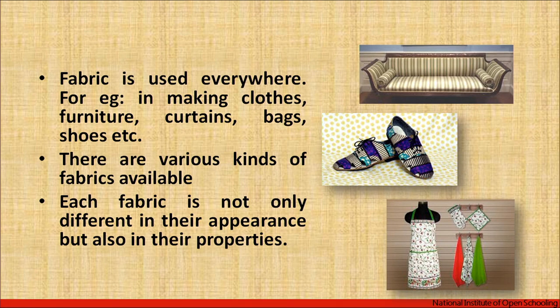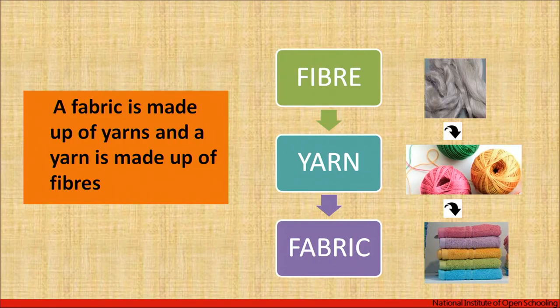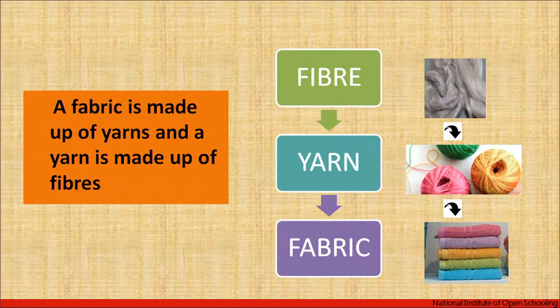Fabric is used everywhere — for example in making clothes, furniture, curtains, bags, shoes, etc. There are various kinds of fabrics available in market like cotton fabric in various forms like poplin and cambric, silk, wool, and shiny fabrics like brocades. A fabric is made up of yarns and yarns are made up of fibers. So the basic building block is the fiber; after fiber we make yarn, and by using yarn we make the fabrics.